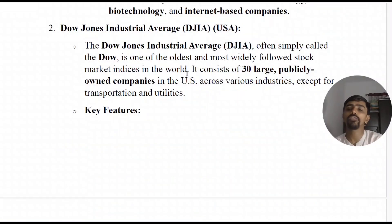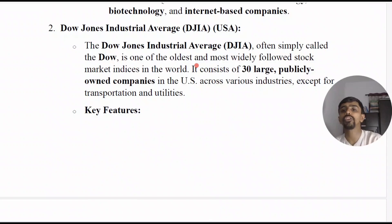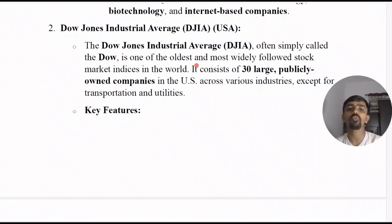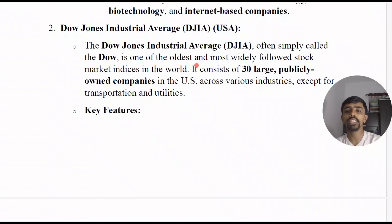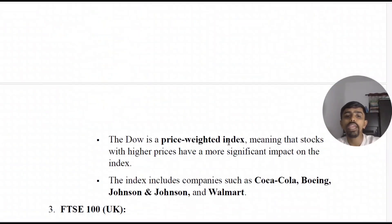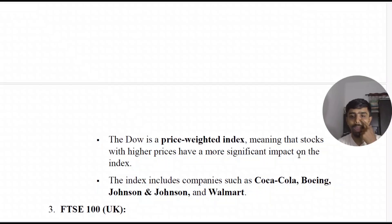The Dow Jones Industrial Average, DJIA, is one of the oldest stock market indexes in the USA. It tracks about 30 large publicly traded companies in the US across various industries, except transportation and utility services. The DJIA is a price-weighted index, meaning stocks with higher prices have a more significant impact on the index. It includes companies such as Coca-Cola, Boeing, Johnson & Johnson, and Walmart.